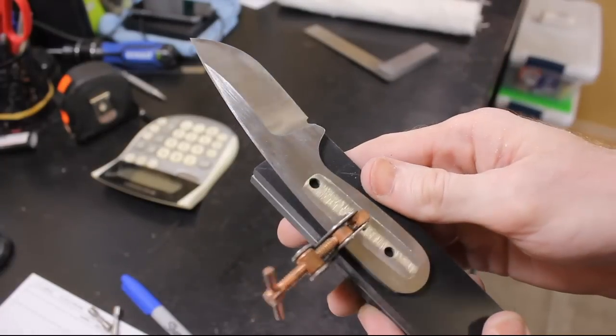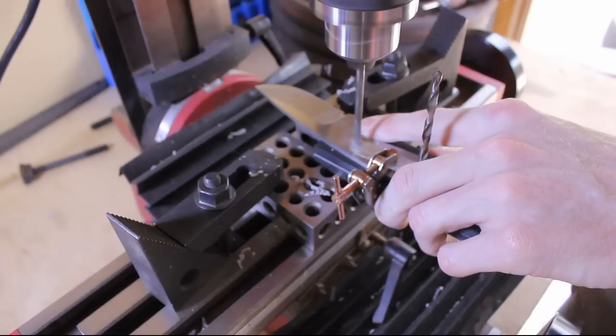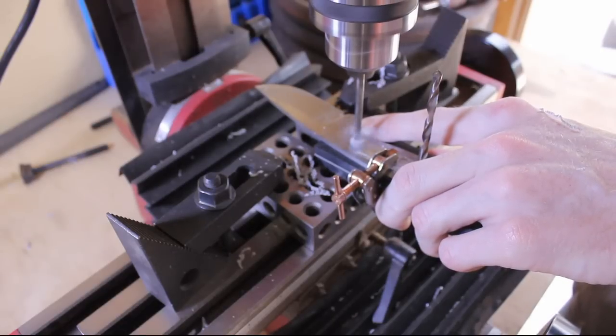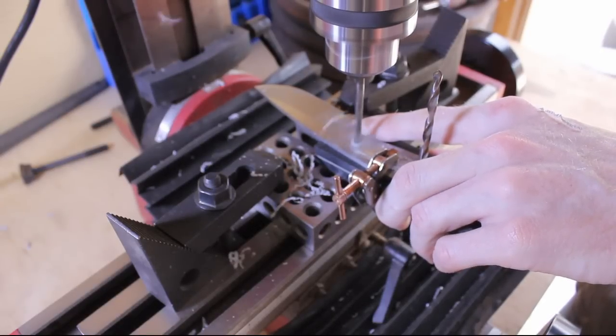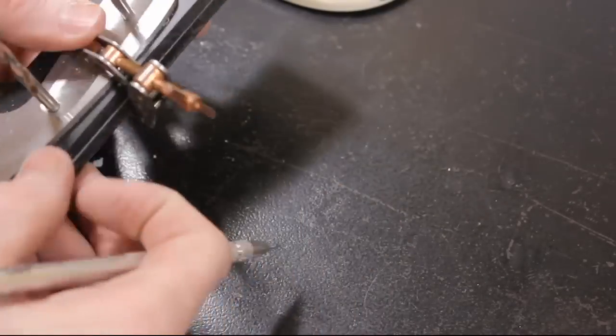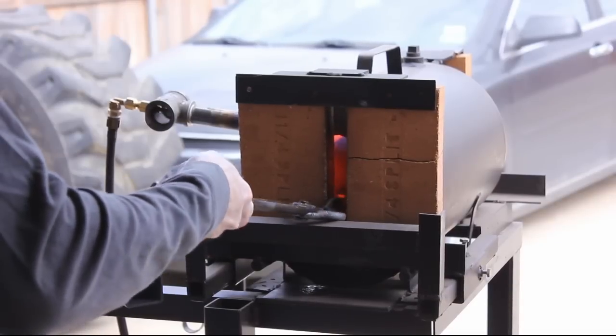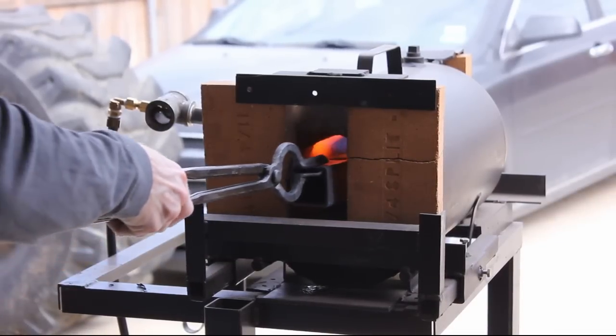Before I went on to the heat treat, I made sure to drill my holes in my handle scales and also trace the outline and the handle out onto the handle scales so I can work on the handle while the blade is tempering. For this knife we're going to be using two slabs, quarter inch slabs of ebony for the handles and eventually stainless steel Corby fasteners.